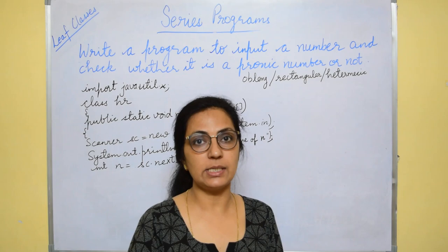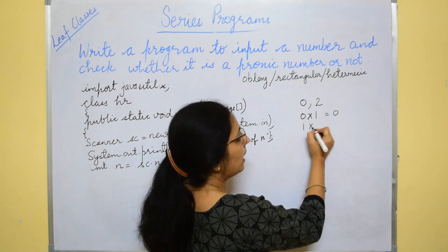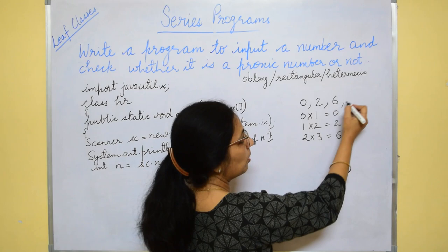Let's take the example 0. 0 is the product of 0 and 1. So 0 is pranic. Next number we take 2. 1 into 2 is 2. So 2 is the pranic number. 6, 2 and 3, 2 consecutive integers. So this is pranic 20.